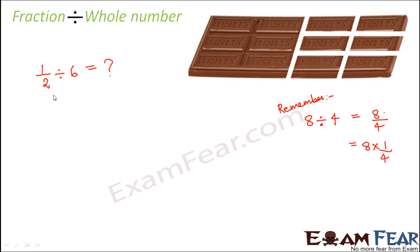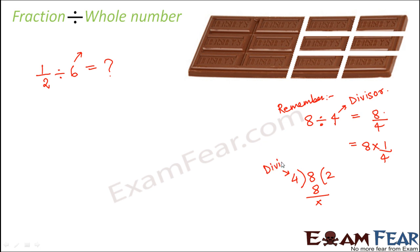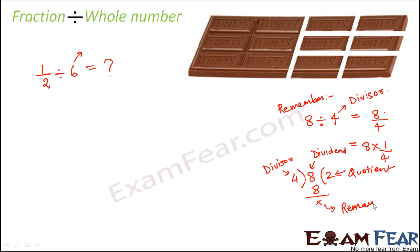We will follow the same logic for fractions. When we say one-half divided by six, the number by which you are dividing is called the divisor. In eight divided by four, four is the divisor. The number being divided is called the dividend, the result is the quotient, and any balance left over is the remainder. These are the important terms in division.